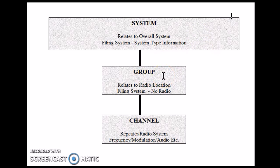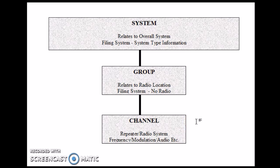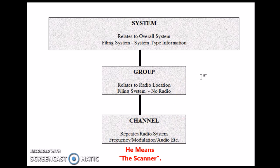The group is a part that relates to the location of the radio — it could be in Tallahassee or a Sears store or wherever. It's kind of a filing system operation as well, and it has no radio data in it. The channel is the box that stores the radio or radio system information, storing things like frequency, audio, modulation, and items like that. Once you get the information logged into these three areas, the scanner is pretty well set to go as far as scanning conventional channels.